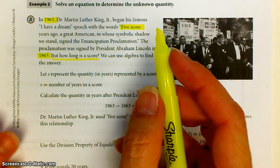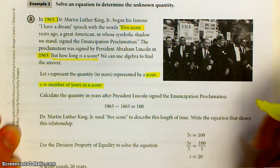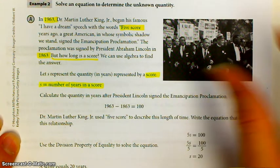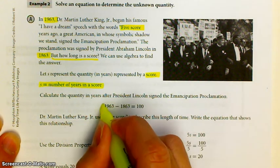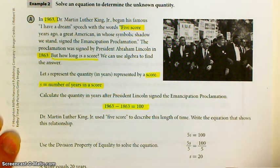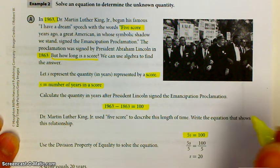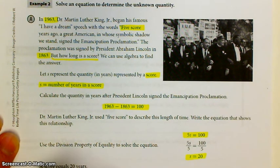We're going to let S represent the quantity of a score. So S is the number of years in a score, not score as in score a goal, score as in like a number of years. Calculate the quantity in years after President Lincoln signed the Emancipation Proclamation. So 1963 minus 1863 and you get 100. Because of the clues from the information, five score years equals 100. I just divide both sides by five and a score is 20 years.